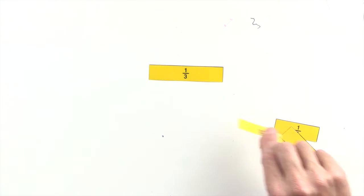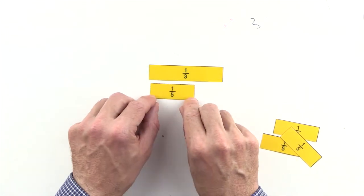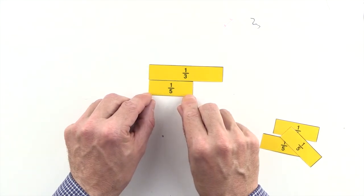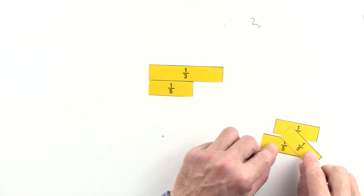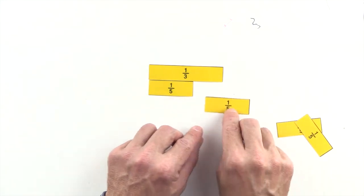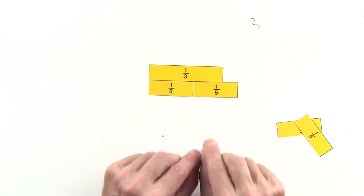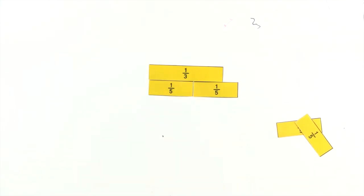1 fifth is less than 1 third, and 2 fifths are greater than 1 third. So we can't use fifths to make an equivalent fraction to 1 third.